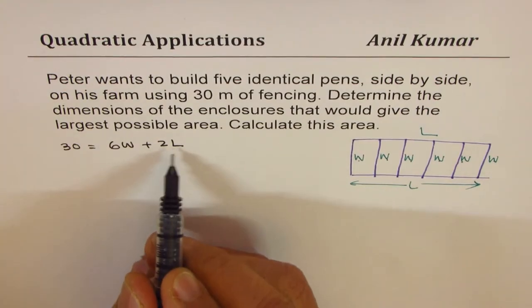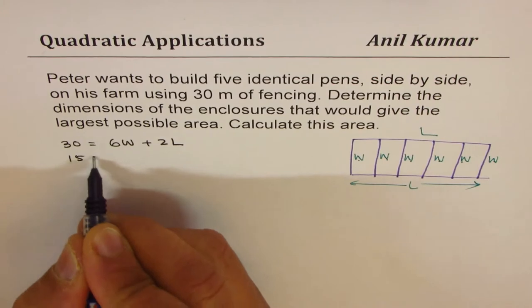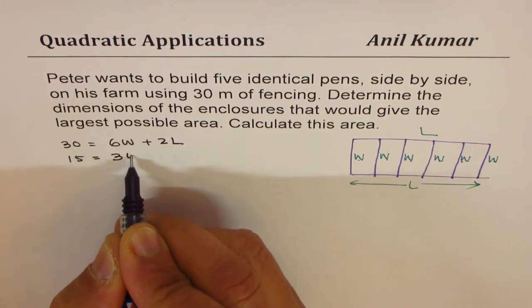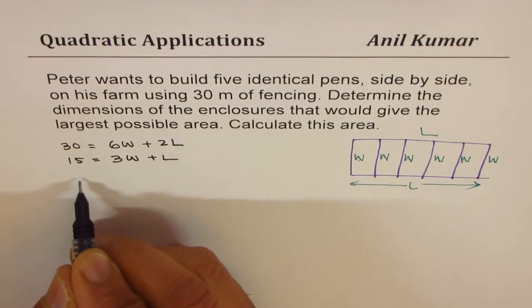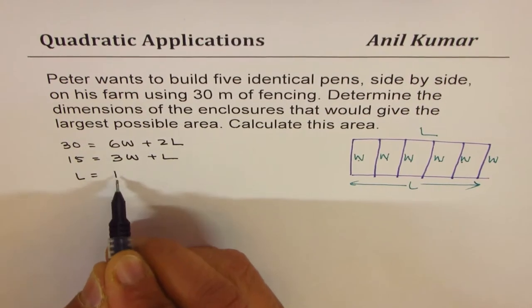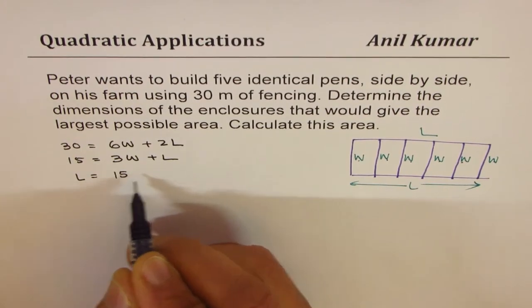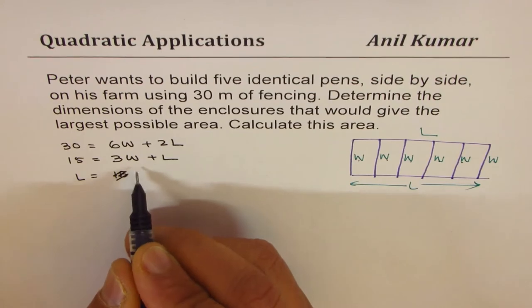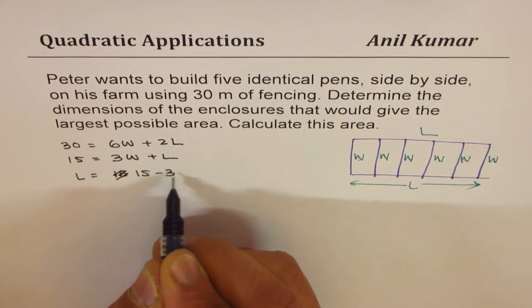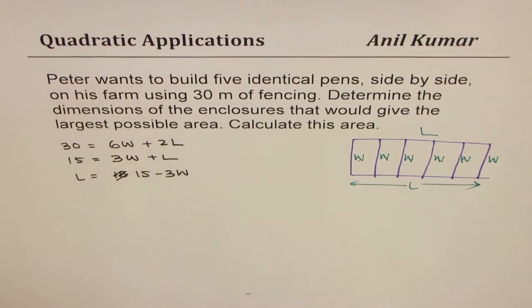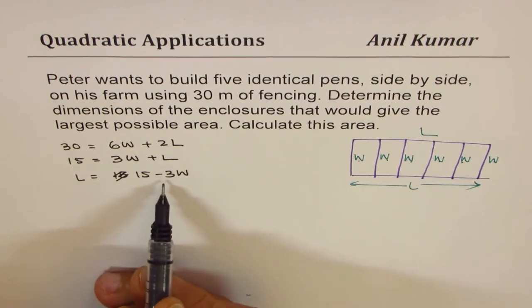Now we could divide by 2, so we get 15 equals 3W plus L. Or rearranging, we see L equals 15 minus 3W. So we know what L is in relation to width.